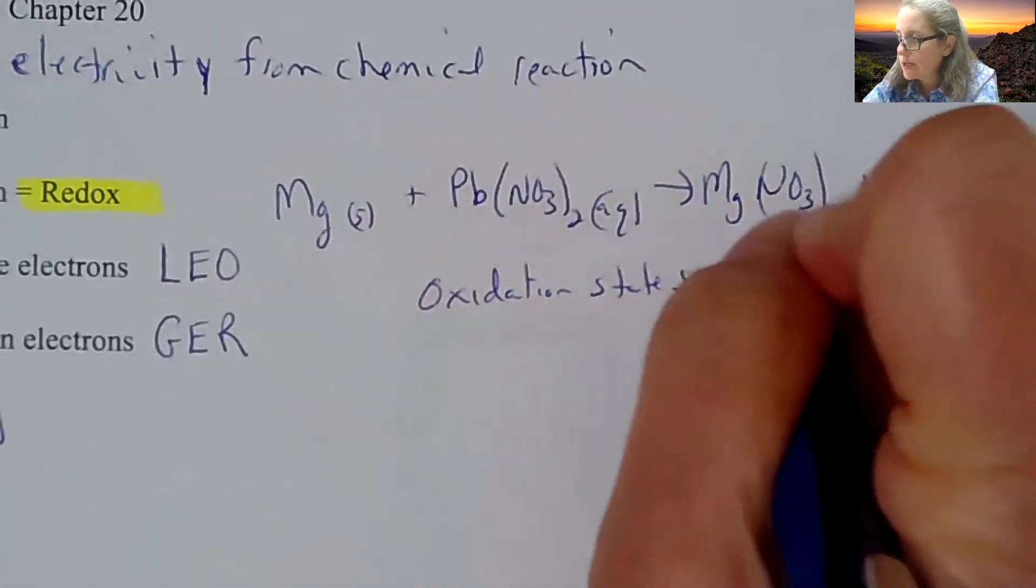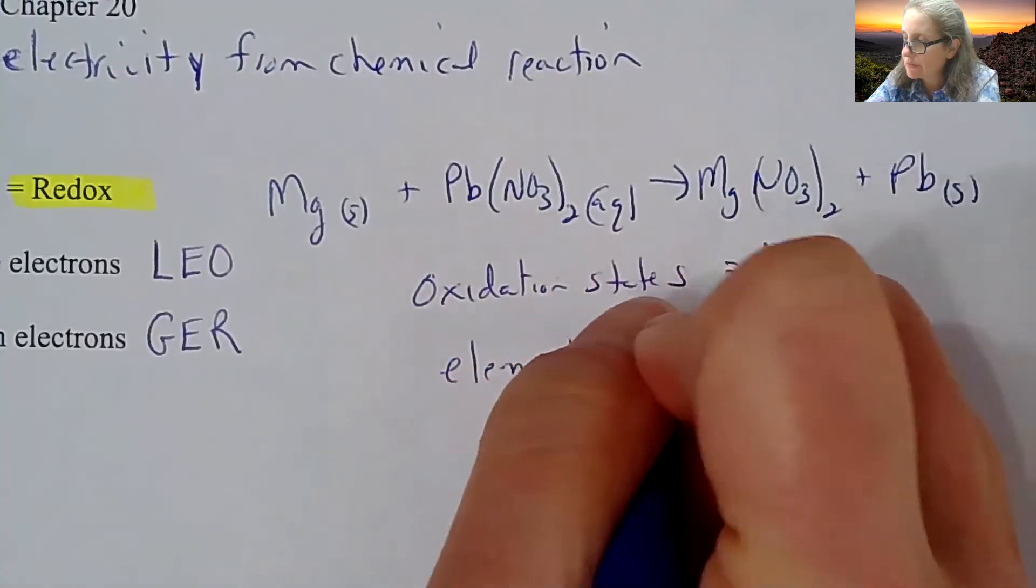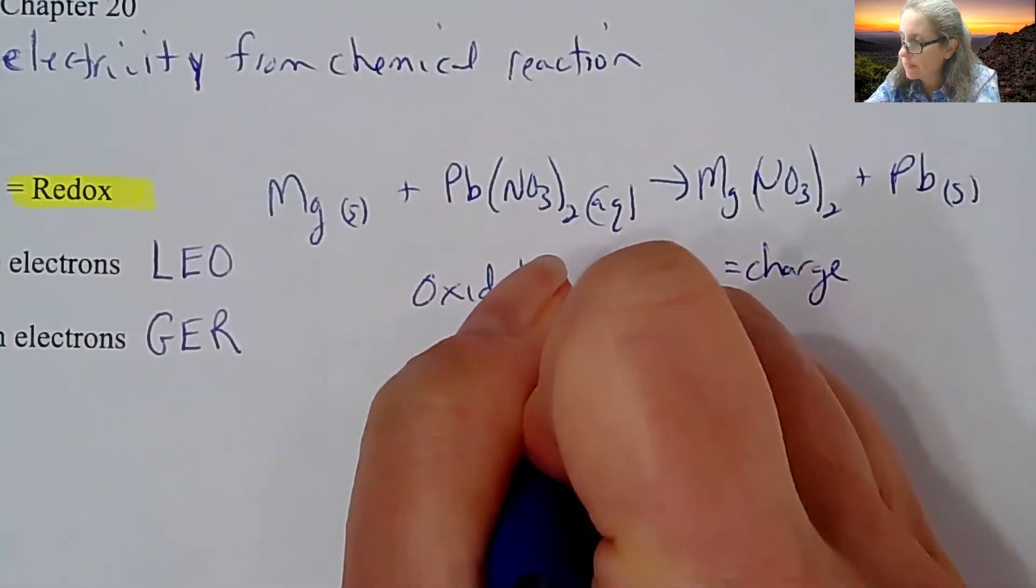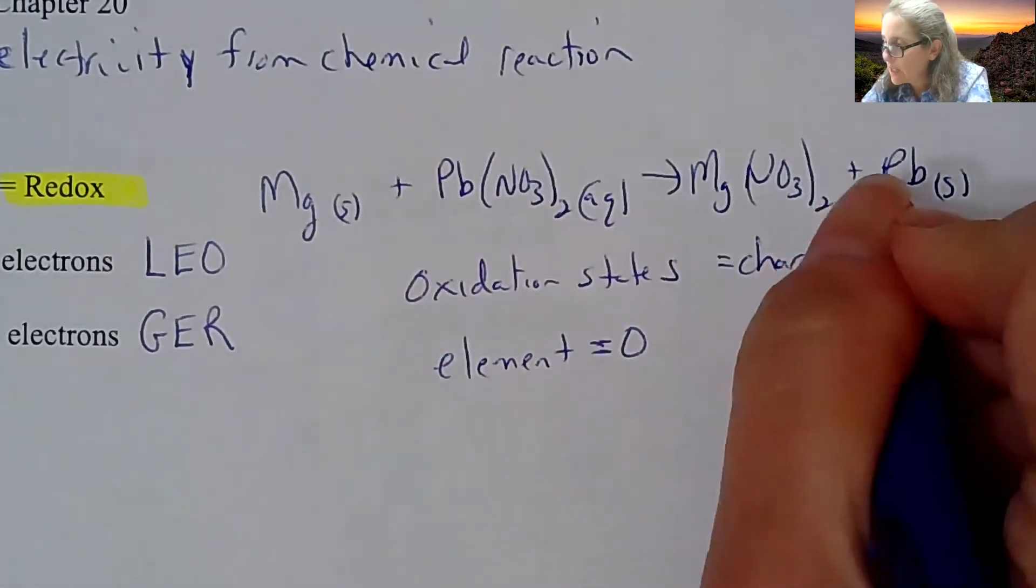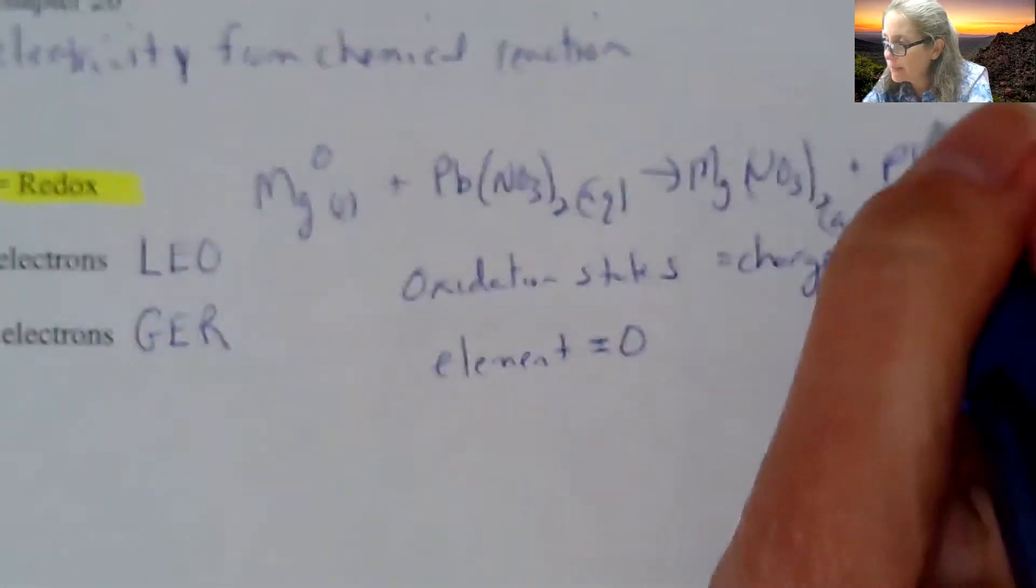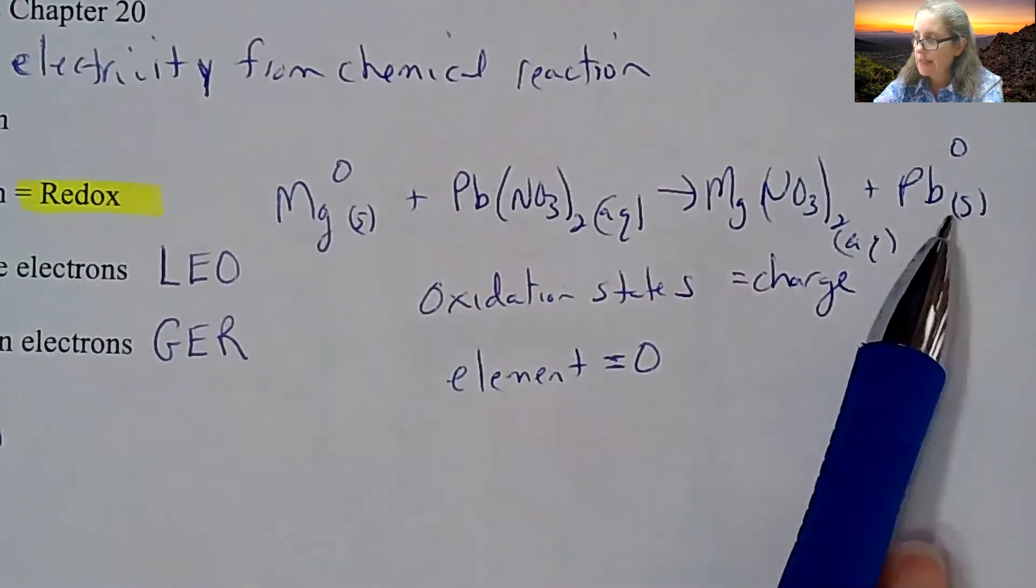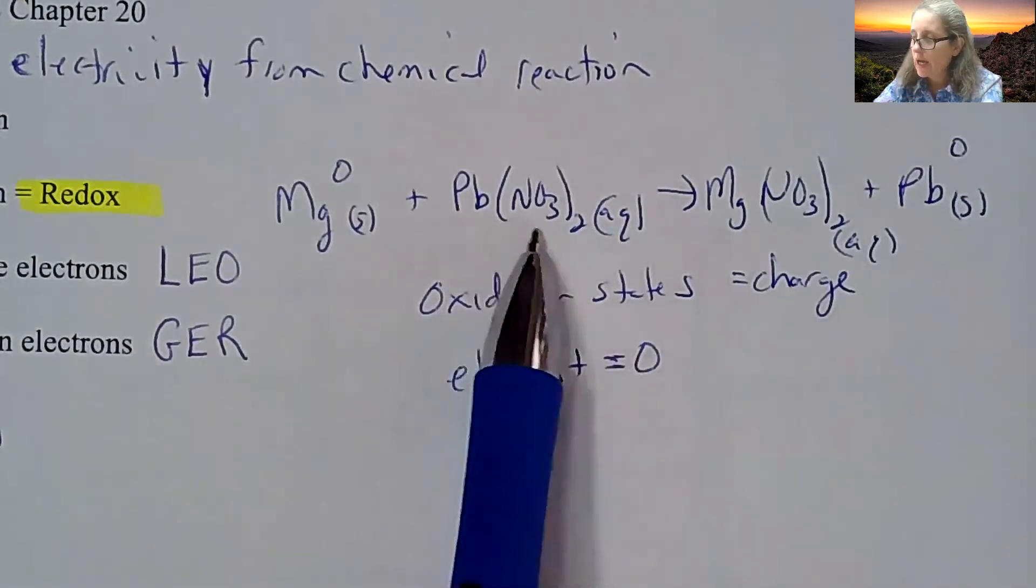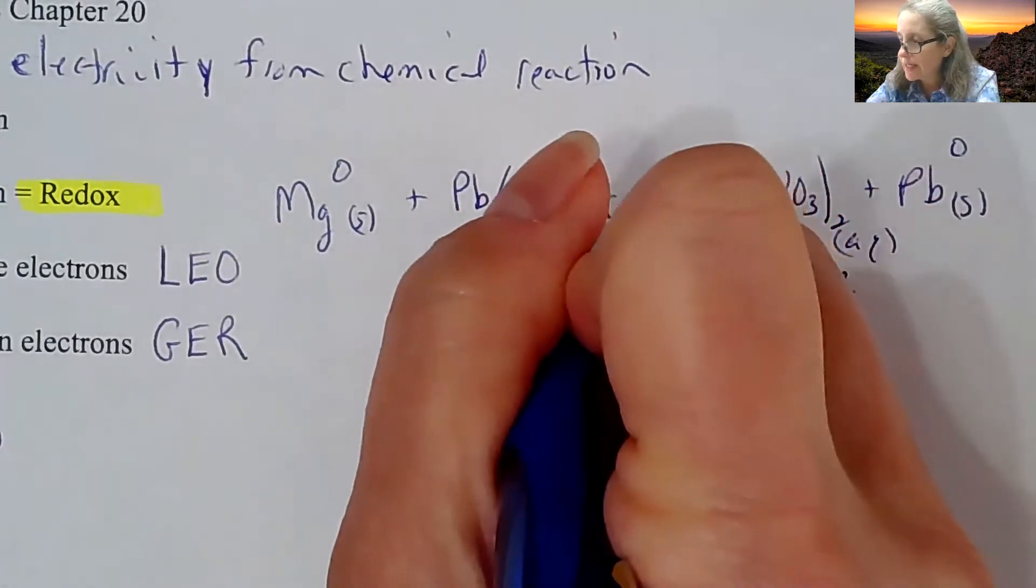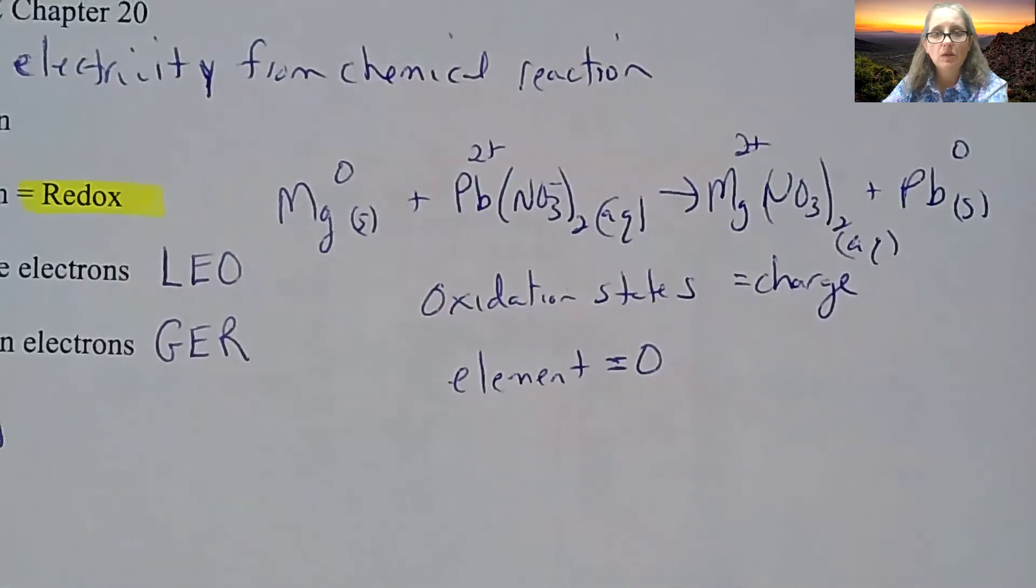Oxidation state equals essentially the charge that you have. Remember that elements have an oxidation state of zero because they exist at that state. Magnesium is an element, lead is an element, so anytime you see a single replacement, chances are the elements listed by themselves are the ones changing oxidation state. Nitrate overall has a negative one charge, so the lead must be plus two, and magnesium is plus two as well.